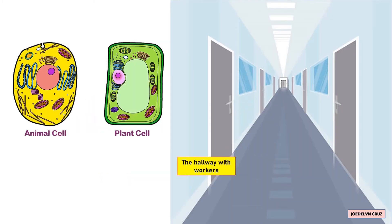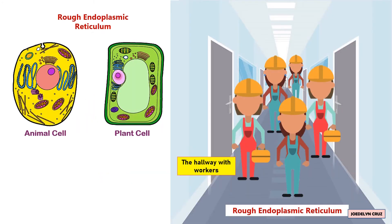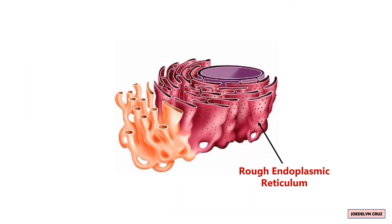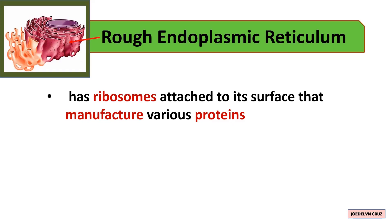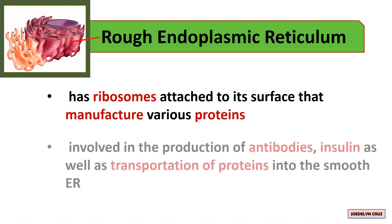The hallway with workers represents the rough endoplasmic reticulum. Rough ER has attached ribosomes on its surface that manufacture various proteins in the cell. Additionally, rough ER is involved in the production of antibodies and insulin, as well as the transportation of proteins into the smooth endoplasmic reticulum.